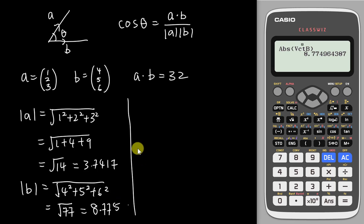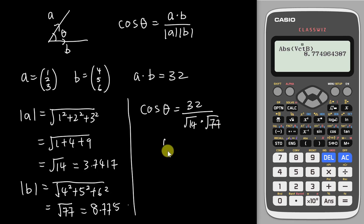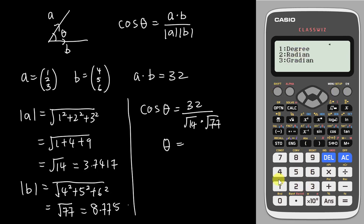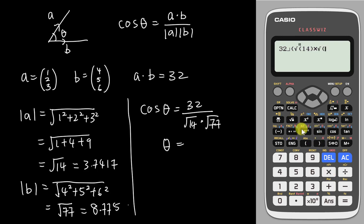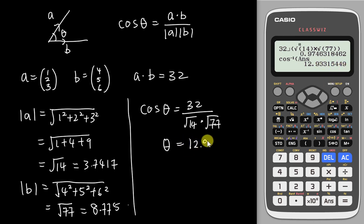Now to find the angle between them, I substitute everything into the calculator: cos(theta) = 32 / (√14 × √77). Depending on whether you want degrees or radians, you go to Shift menu, change the angle unit to degree (number 1). So I type 32 divided by the bracket square root of 14 multiply square root of 77, close bracket twice, tap Enter, then Shift cos on my answer, and the calculator gives theta = 12.93 degrees.